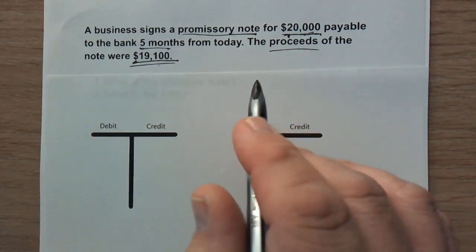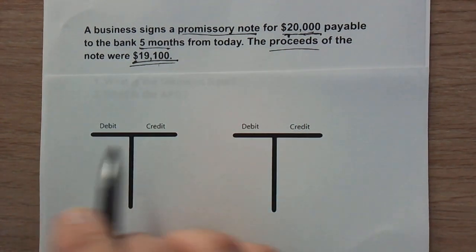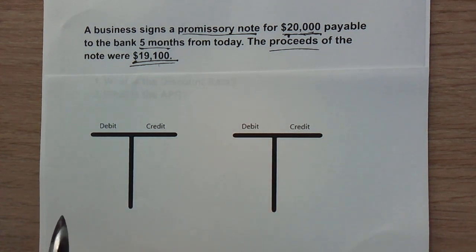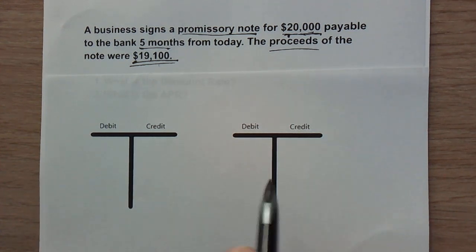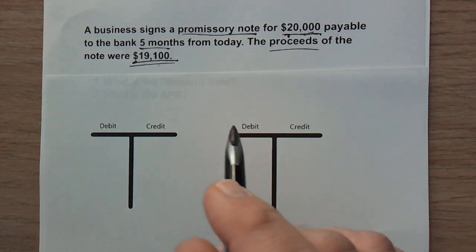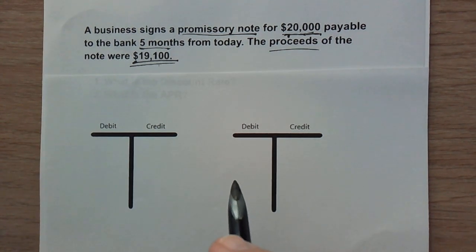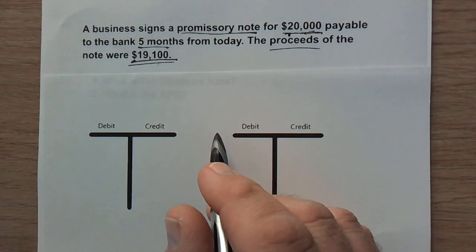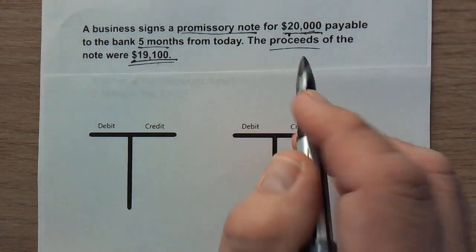I always like to use T-accounts because that makes it much simpler to understand the transactions, and then from the T-accounts I can turn them into journal entries. I definitely recommend this step — many folks skip it, but when it gets very complex they may get lost.